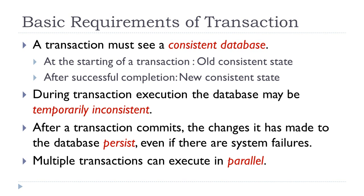If I want to withdraw 2,000 rupees from my account, after successful completion, I will enter into a new consistent state where the balance is updated to 8,000 rupees. So in both cases, I want to ensure consistency. But during the execution of the transaction, the database may be temporarily in an inconsistent state. Suppose halfway through, my transaction gets cancelled — it needs to go back to one of these consistent states. After a transaction commits, the changes made to the database must persist even if there are system failures.